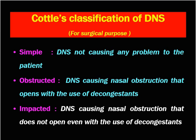The second type is obstructed DNS. In this condition, DNS causes nasal obstruction but it opens with use of decongestant drops. If you apply a decongestant for some time, the obstruction is relieved. This may require surgery but it is not compulsory. Impacted DNS is defined as DNS that causes nasal obstruction that does not open even with the use of decongestant. This condition is one of the indications for surgery, either septoplasty or SMR surgery.